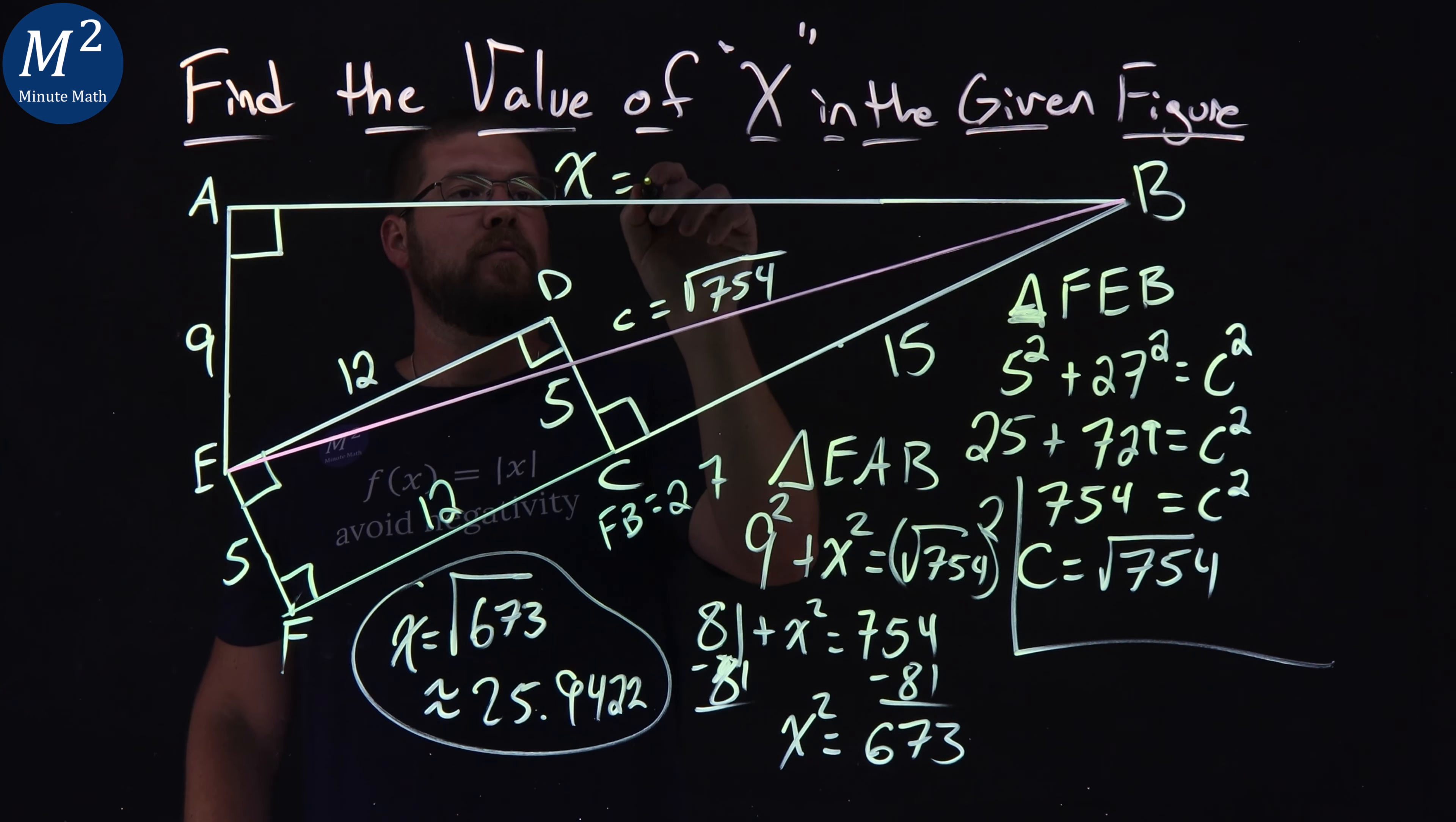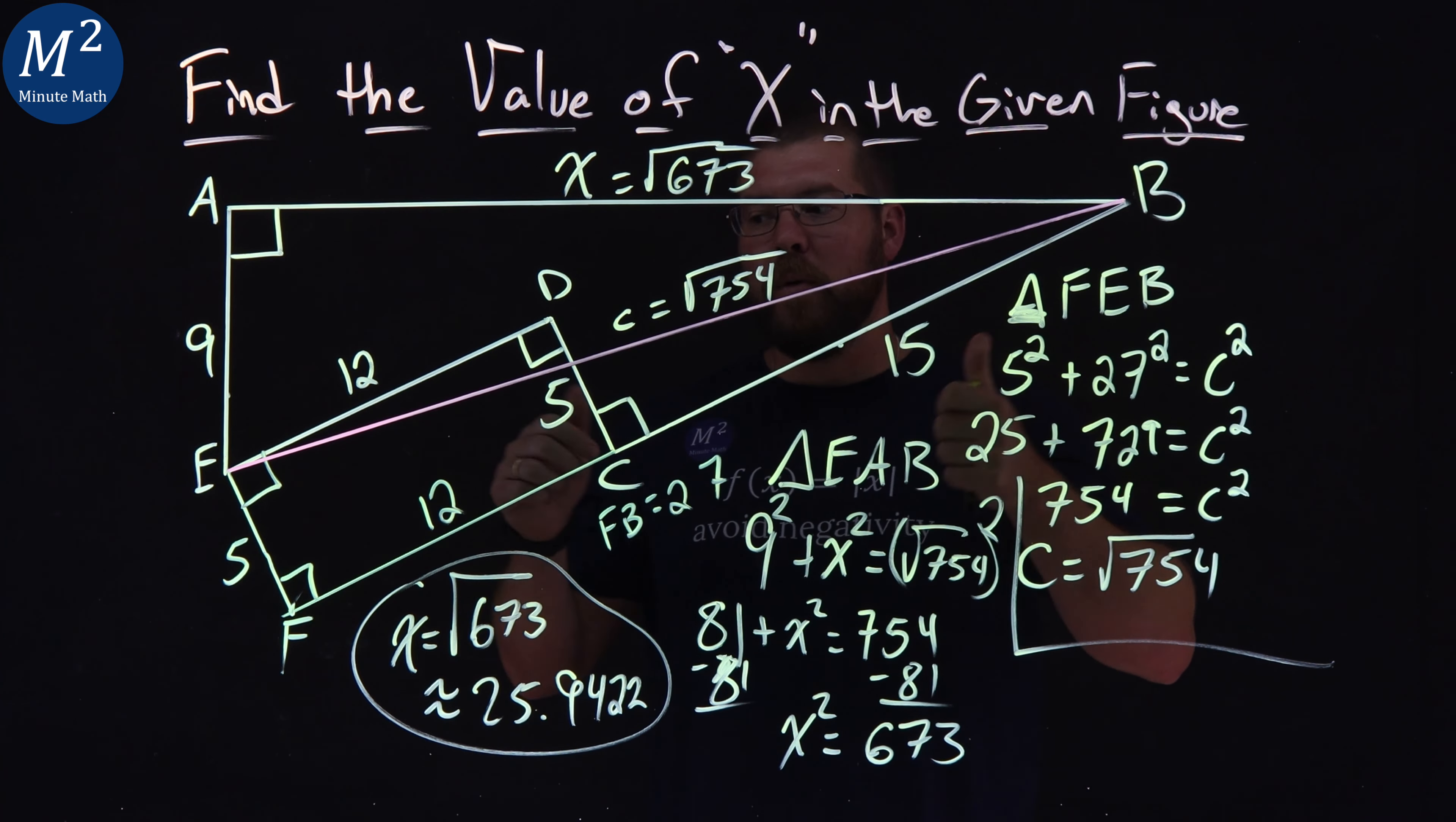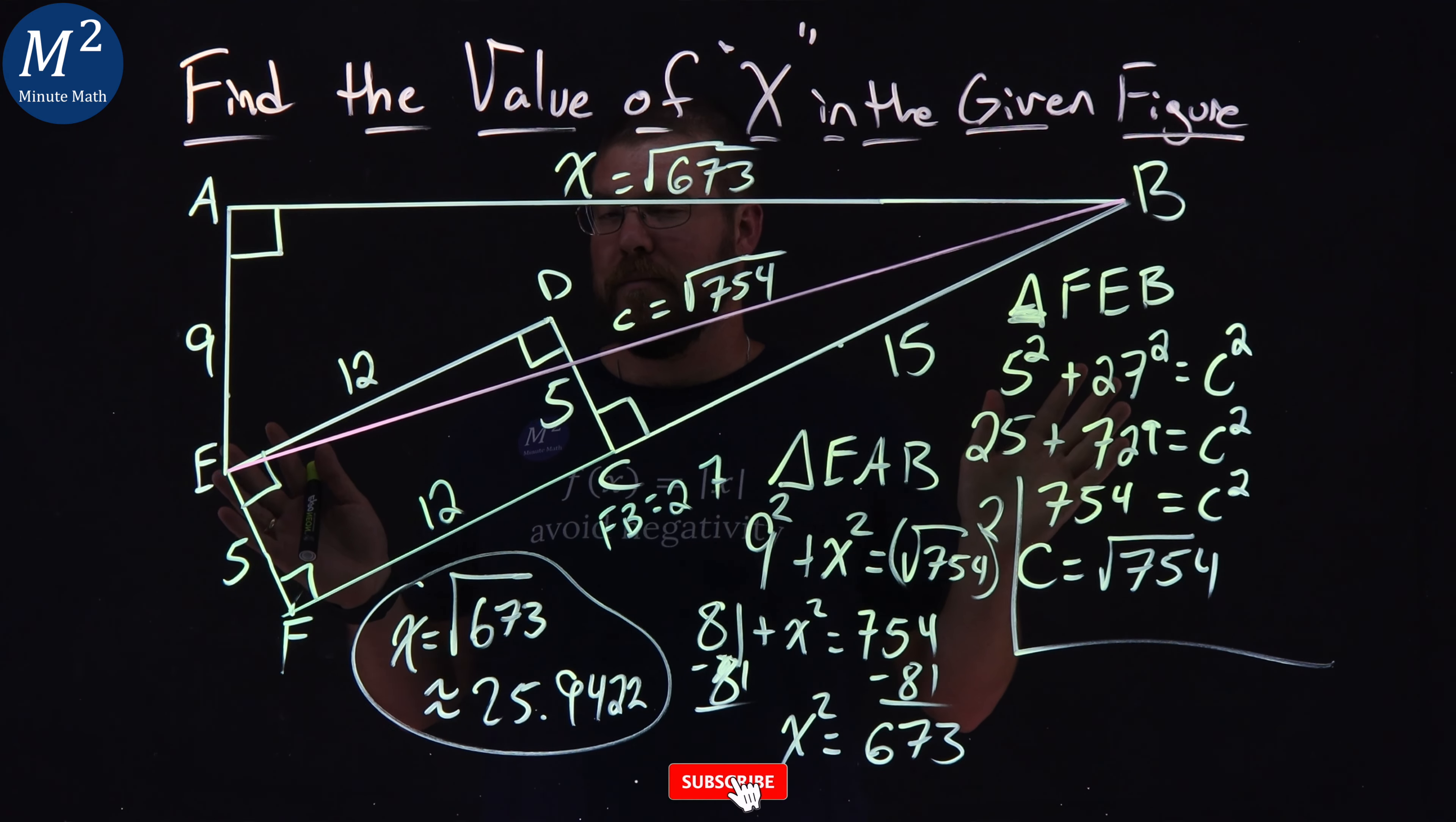So there we got it. X equals the square root of 673. Not as neat of an answer as you maybe wanted, but hey, we got the exact answer or the approximate if we want. Was this what you got? If it was, way to go. If not, I'm sorry, hopefully you learned something here. But if you got this a different way, that's what I really want to know. If you can write out how you got this a different way, that'd be awesome.